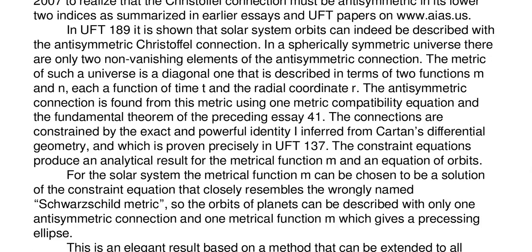In UFT 189 it is shown that solar system orbits can indeed be described with the anti-symmetric Christoffel connection. In a spherically symmetric universe there are only two non-vanishing elements of the anti-symmetric connection. The metric of such a universe is a diagonal one described in terms of two functions M and N, each a function of time and the radial coordinate R. The anti-symmetric connection is found from this metric using one metric compatibility equation and the fundamental theorem of the preceding essay SA41. The connections are constrained by the exact and powerful identity inferred from Cartan's differential geometry, which is proven precisely in UFT 137. I describe this as the Cartan-Evans identity for the sake of nomenclature.